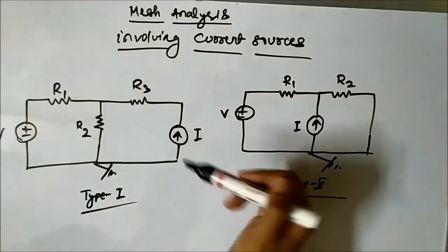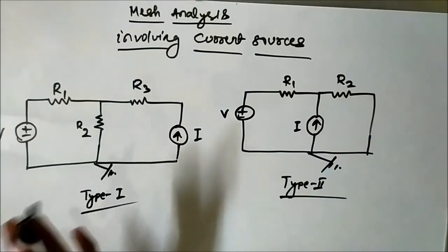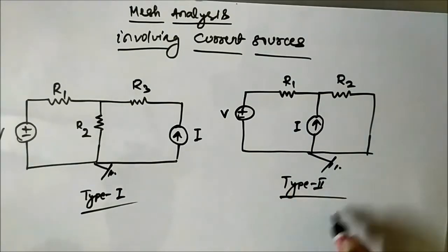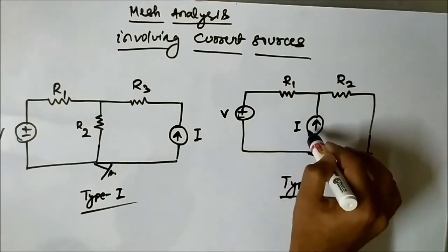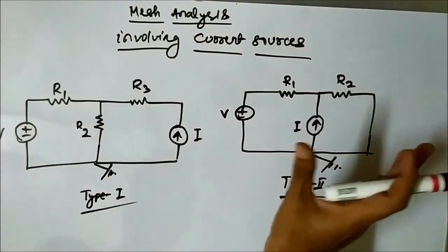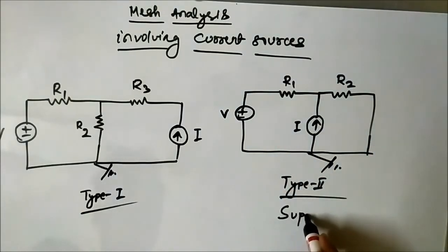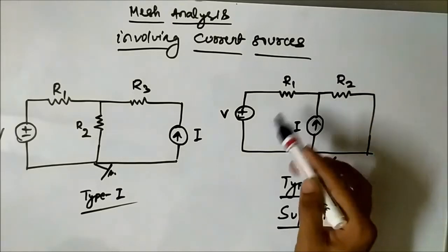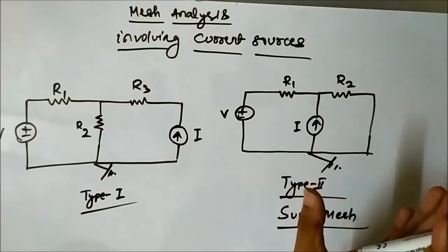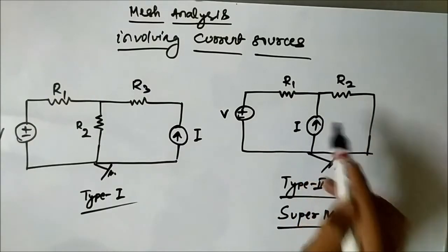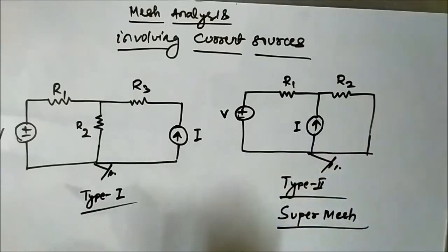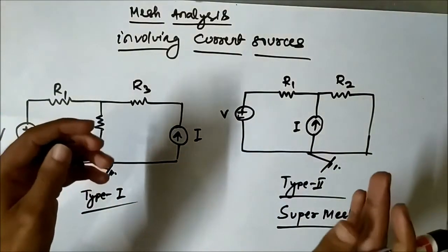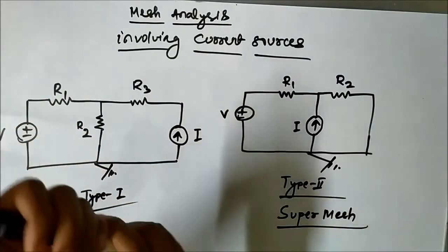The Type 1 circuit is quite straightforward and easy to solve. But the Type 2 circuit can be a little tricky — not difficult, but tricky. This Type 2 configuration, where the current source is in-between or common to all involved meshes, is called a super mesh. A super mesh is a group of meshes or closed paths in a circuit network with a common current source. We will discuss these two configurations separately in separate videos with examples.